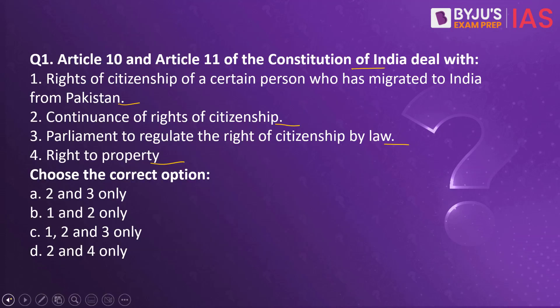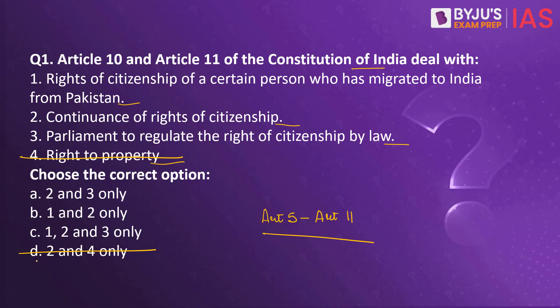So what is citizenship? Citizenship signifies the relationship between an individual and the state. The Constitution of India does not define the term citizen, but the details of various categories of people entitled for citizenship are given in Part 2, that is Article 5 to Article 11. If you know this much, you can eliminate option 4 and option D, since that is the only option containing No. 4.